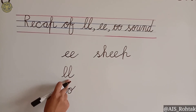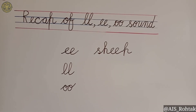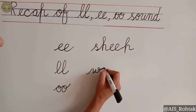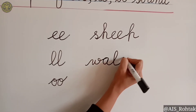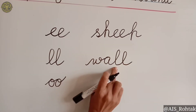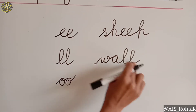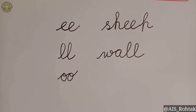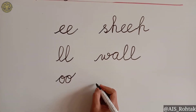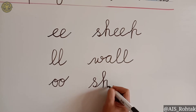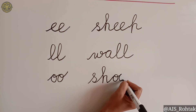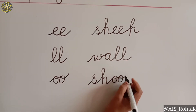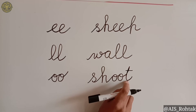For LL, if we want to write 'wall', we write W-A and double L — it will make a long sound. If we want to write 'shoot', we write S-H and for the long sound we write double O: S-H-OO-T.